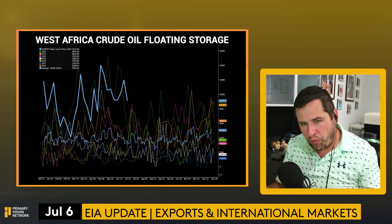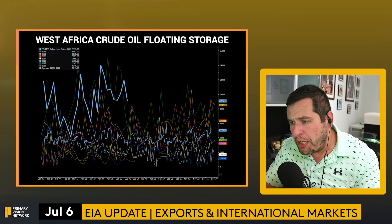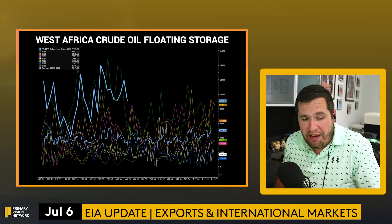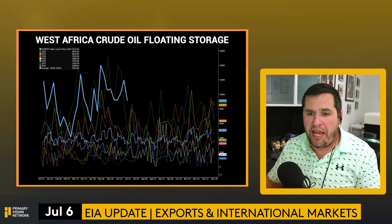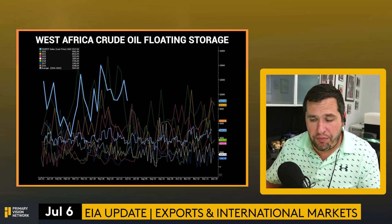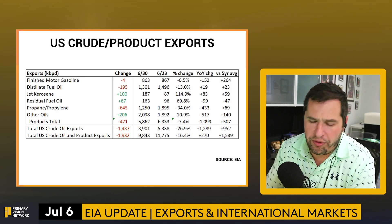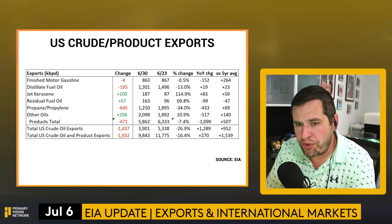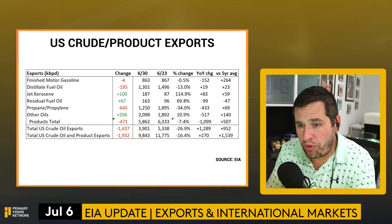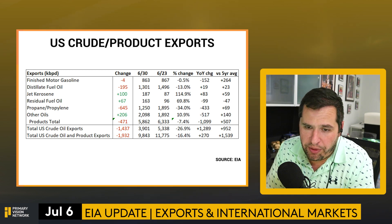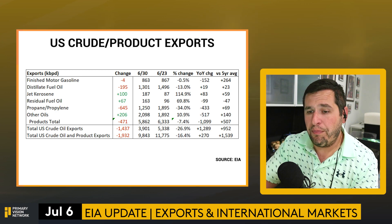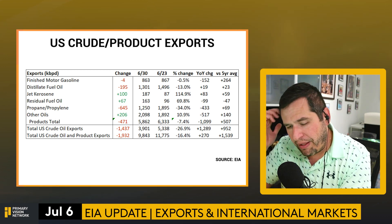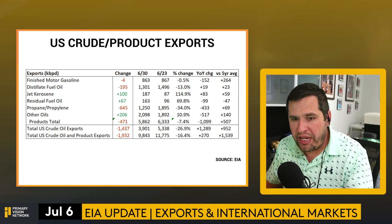West Africa crude oil floating storage got re-rated and moved up slightly but is coming down as more sales emerge from West Africa — heavier crude getting moved into the system. Looking at US crude and product exports: gasoline had a small decline of 4,000 barrels a day, still well over the five-year average; distillate dropped 195,000 barrels a day, still 23,000 over the five-year average; propane/propylene had a big drop of 645,000, still above the five-year average; crude oil exports continue bouncing around with some lumpiness.